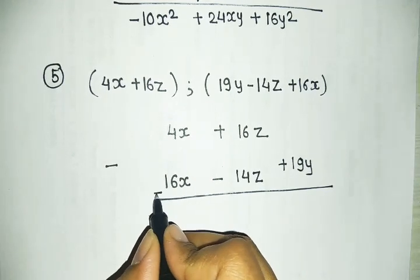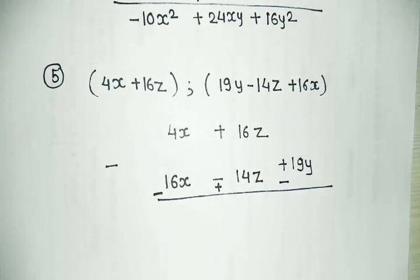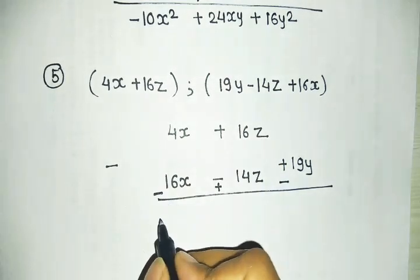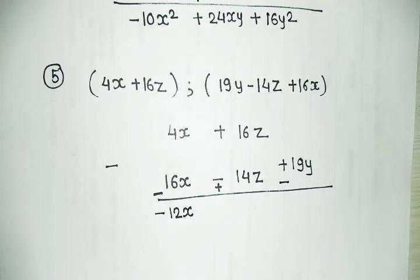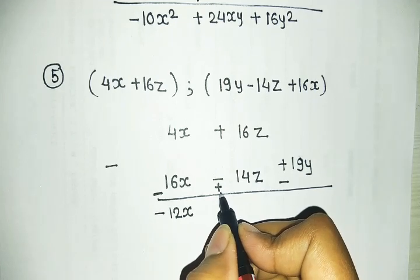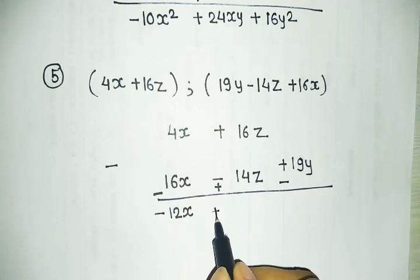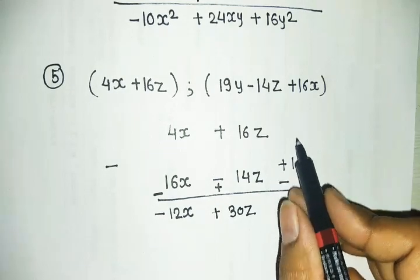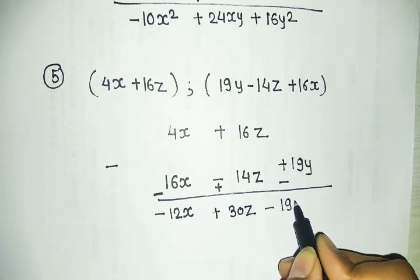Applying the minus sign changes all signs of the second expression: plus becomes minus, minus becomes plus, plus becomes minus. Now 4x minus 16x: plus minus becomes minus, giving minus 12x. For z: 16 plus 40 gives plus 30z. For y: 0 minus 19y equals minus 19y. The final answer is minus 12x plus 30z minus 19y.